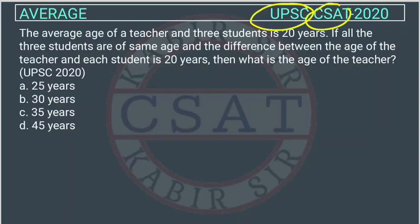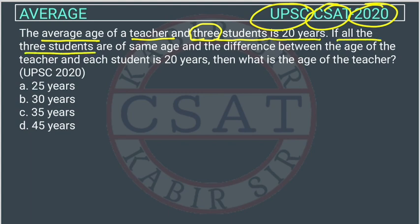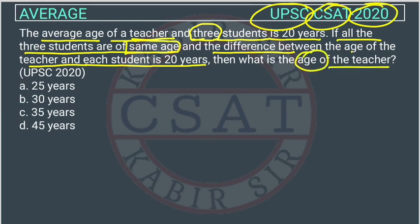This is a question asked in the UPSC CSET 2020 exam. The average age of a teacher and 3 students is 20 years. If all 3 students are of the same age, and the difference between the age of the teacher and each student is 20 years, then what is the age of the teacher?